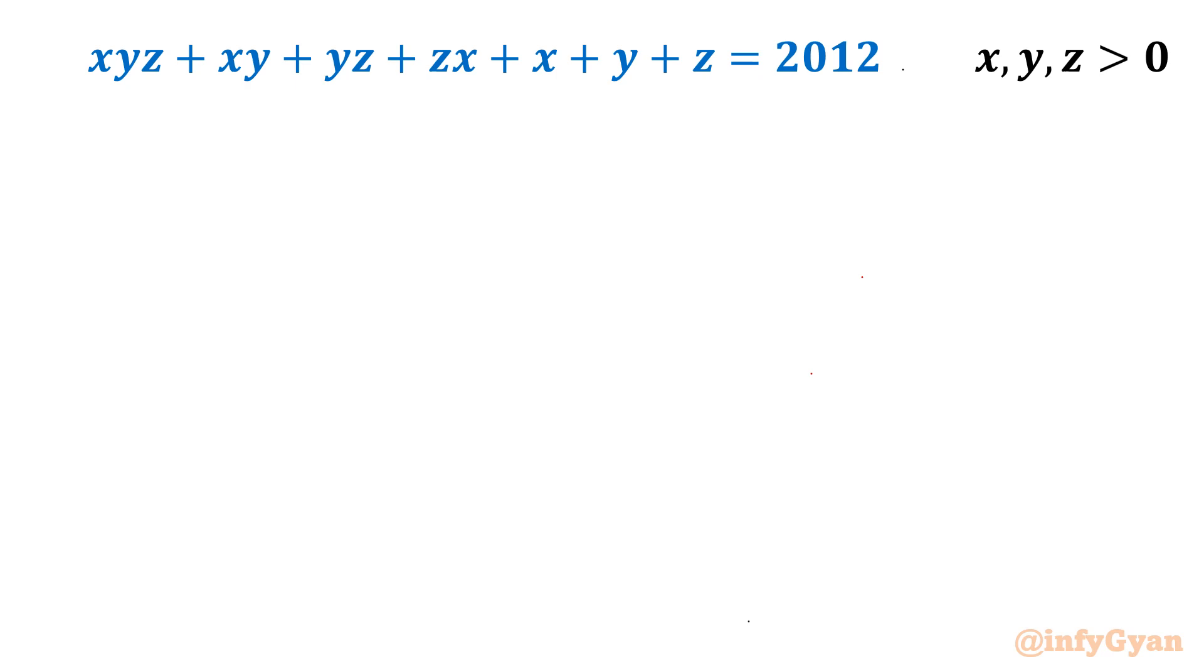We are going to solve an interesting Diophantine equation: xyz plus xy plus yz plus zx plus x plus y plus z equal to 2012. We have to find out all positive integers x, y, z satisfying this. So let's get started.